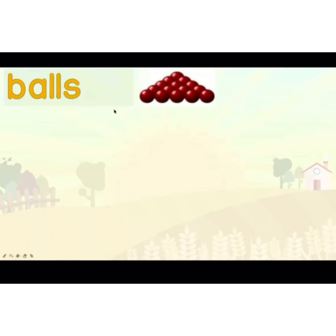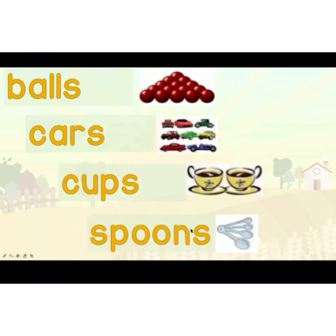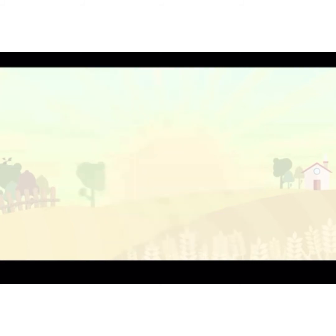Like this — balls. Balls — nampak ada 's' kat hujung. It's simple: to change from singular to plural, you need to add 's' — untuk menjadikan daripada satu barang ke banyak barang, tambah 's' ataupun 'es' sahaja. For example: balls, cars.